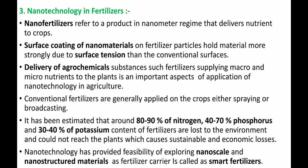Surface coating of nanomaterials on fertilizer particles holds the material more strongly due to surface tension. This improves the stability of nutrients and fertilizers in the soil. Delivery of agrochemicals, including macro and micronutrients, is an important aspect of nanotechnology in agriculture. Conventional fertilizers applied by spraying or broadcasting result in approximately 90% nitrogen loss, 70% phosphorus loss, and 30–40% potassium loss to the environment.